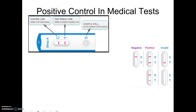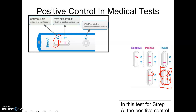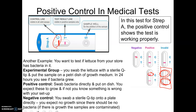Another good example is medical tests. If you've taken a COVID test or a strep test, there's a positive control line. If you take a COVID test and the control line doesn't turn pink, you can't say you don't have COVID — because if the control line didn't turn pink either, something is wrong with your test. That control line is treated with something that should purposely make the test positive, confirming the test itself is working.